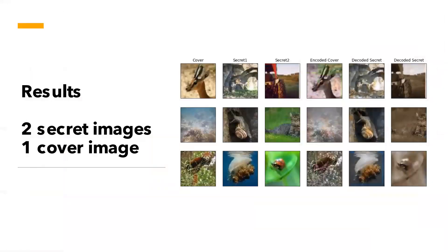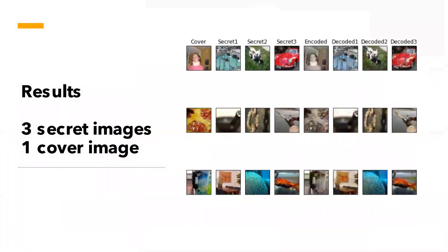For implementation, we used two secret images and passed them to our model. We were able to successfully retrieve them. The figure shows the cover image, secret images, encoded cover image, and retrieved secret images. Next, we did the same to hide three secret images. The retrieved secret images look similar to the original secret images to a great extent. However, as you can see, the encoded cover images are more lossy compared to the case where we used only two secret images.